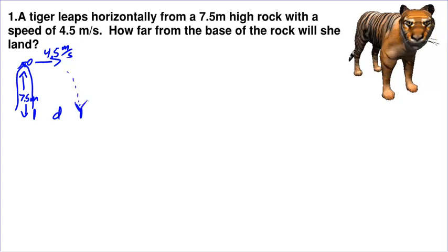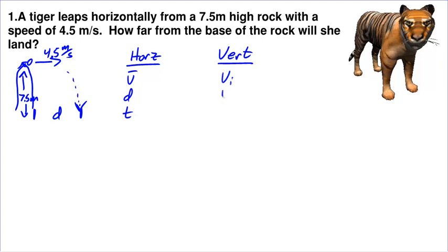The tiger lands right there. This is a projectile problem, so let's take a look in both the horizontal and the vertical directions. Horizontally, there's no acceleration — gravity doesn't pull you sideways — so we can use V average, D, and T. And vertically, we'll use our standard Vi, Vf, D, A, and T.